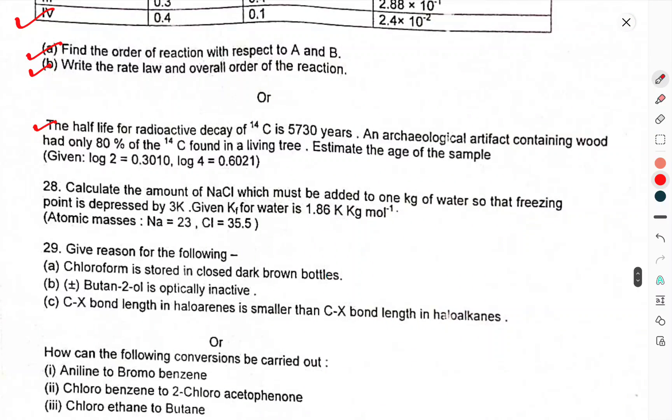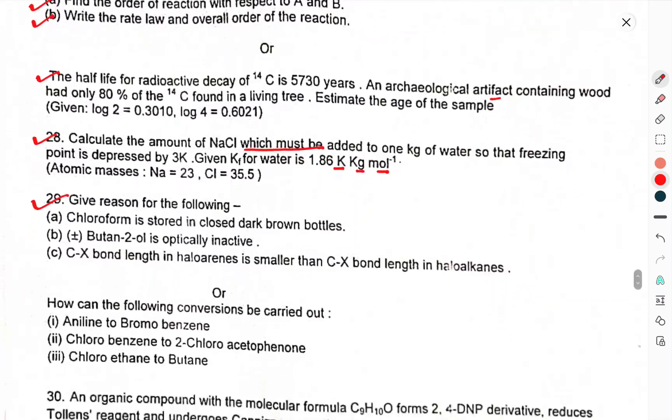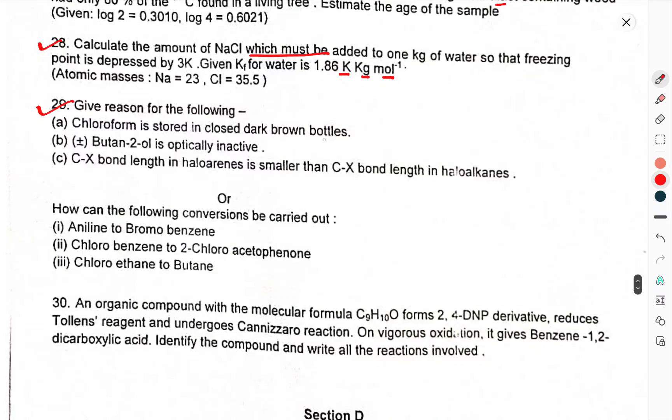Question 28: Half-life for radioactive decay of carbon-14 is 5730 years. An archaeological artifact containing wood had only 80% of the carbon-14 found in living trees. Estimate the age of the sample (given log 2 = 0.3010, log 4 = 0.6021). Question 29: Calculate the amount of NaCl which must be added to 1 kg of water so that freezing point is depressed by 3K (Kf for water is 1.86 K·kg/mol). Question 30: Give reasons for the following - Chloroform is stored in closed dark brown bottles. Butan-2-ol is optically inactive. C-X bond length in haloarenes is smaller than C-X bond in haloalkanes.